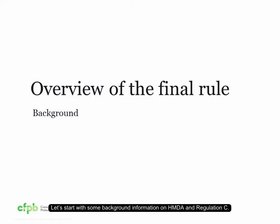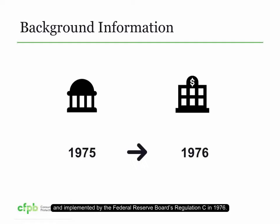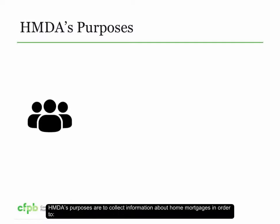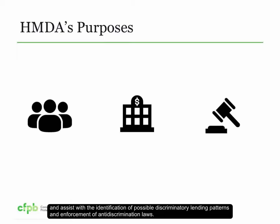Let's start with some background information on HMDA and Regulation C. HMDA was enacted by Congress in 1975 and implemented by the Federal Reserve Board's Regulation C in 1976. HMDA's purposes are to collect information about home mortgages in order to help determine whether financial institutions are serving the housing needs of their communities, assist public officials in distributing public sector investment to attract private investment to areas where it is needed, and assist with the identification of possible discriminatory lending patterns and enforcement of anti-discrimination laws.